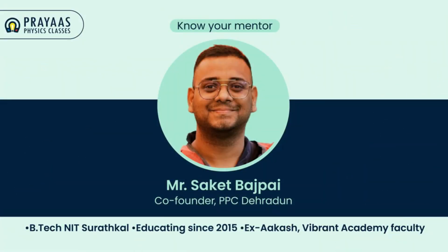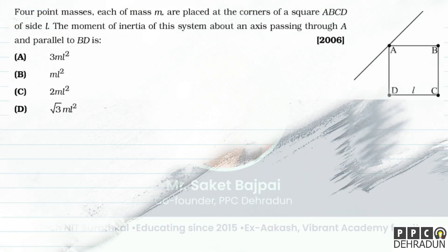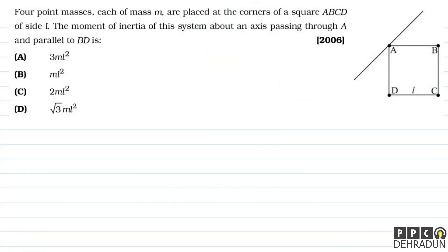Hello everyone, I'm Sakit Bhajpayee, co-founder, Prayas Physics Classes, Dehradun. Welcome students, let's have a look at this beautiful problem. The question says: four point masses, each of mass m, are placed at the corners of a square ABCD of side L. The moment of inertia of this system about an axis passing through A and...